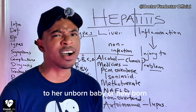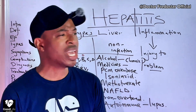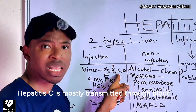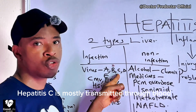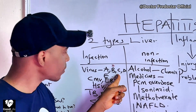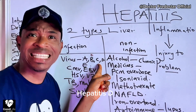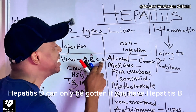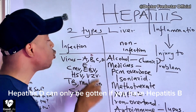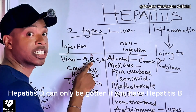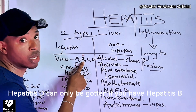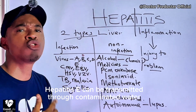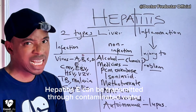Hepatitis C — through blood. Hepatitis D — you can only get hepatitis D if you already have hepatitis B. And hepatitis E — through contaminated water.